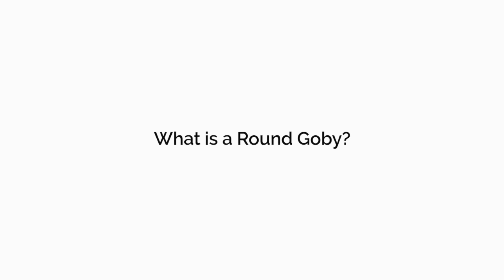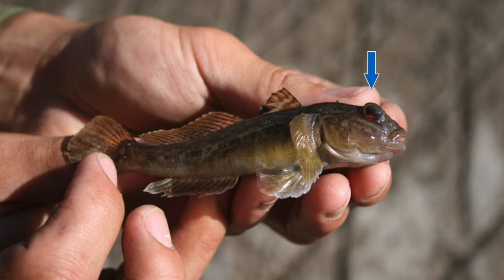In particular, anglers should be aware of the round goby. Round gobies are small fish that resemble native sculpin. They have large frog-like eyes on the top of their head, a black spot on their dorsal fin, and pelvic fins that are fused together to form a suction.